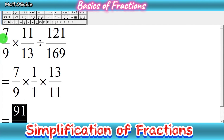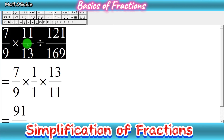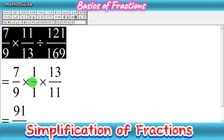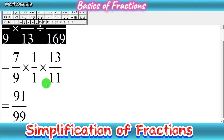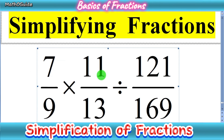Whenever we have three fractions being multiplied and divided — like 7 over 9 multiplied by 11 over 13 divided by 121 over 169 — this is a very easy method. Simply convert the division sign into multiplication, then check if some numbers have common factors and cancel them out. Then multiply numerator with numerator and denominator with denominator. I hope you got the basic concept of how to simplify this type of fraction. Thanks for watching, and don't forget to subscribe to my channel.